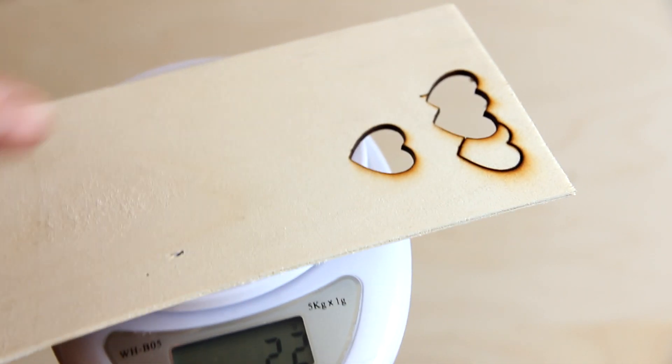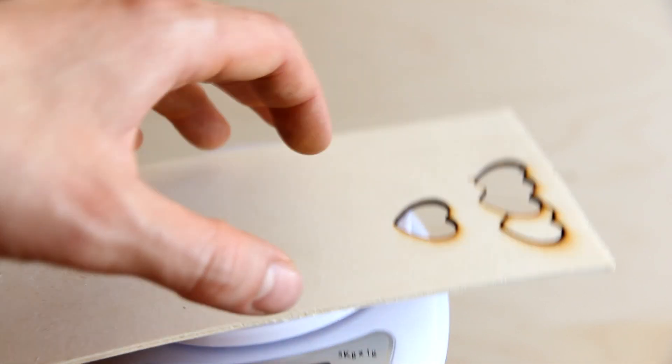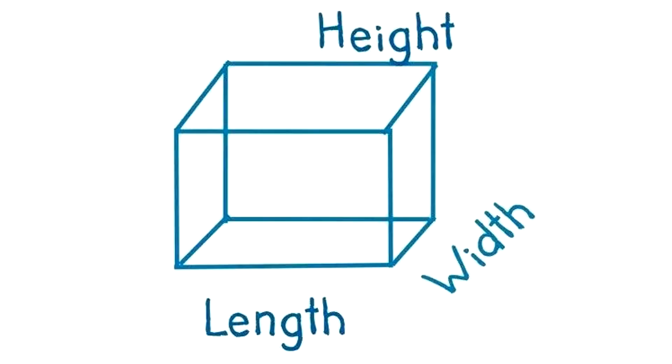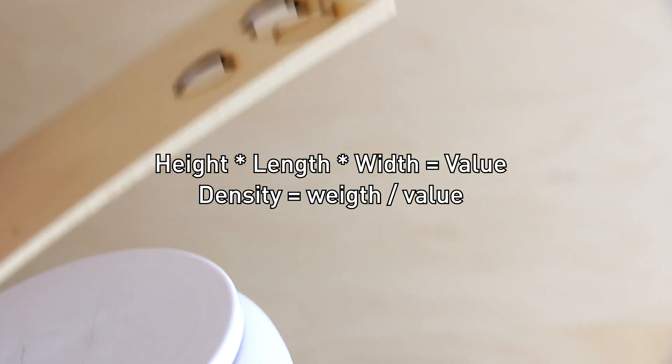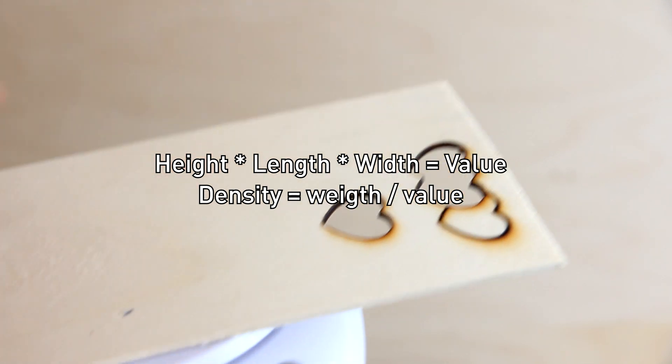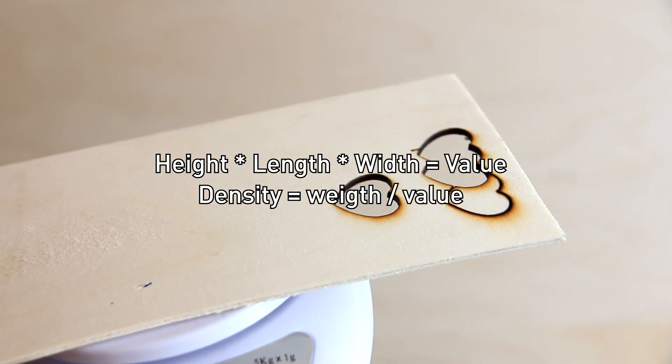Then you calculate length, width, and height. You multiply them, and then you divide your weight by your volume to get the density.